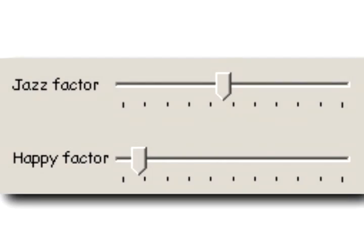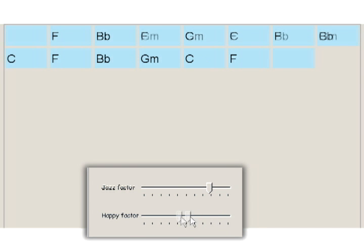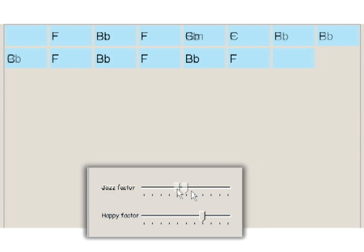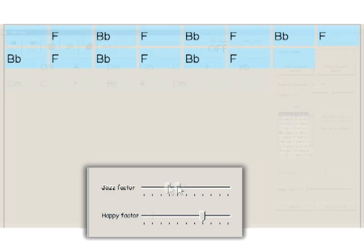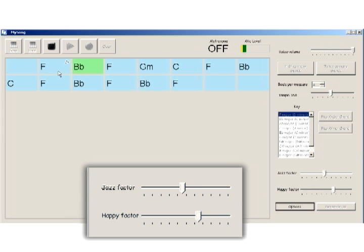Because there are many accompaniments that are appropriate for a given melody, MySong allows the user to adjust the chords chosen by the system using parameters that are intuitive to non-musicians. One slider bar allows the user to make the accompaniment happier.